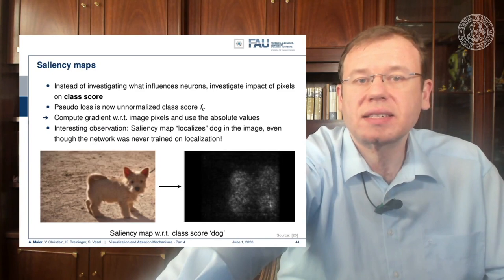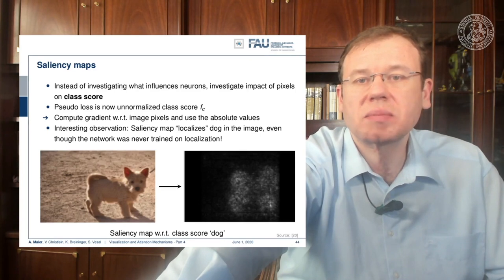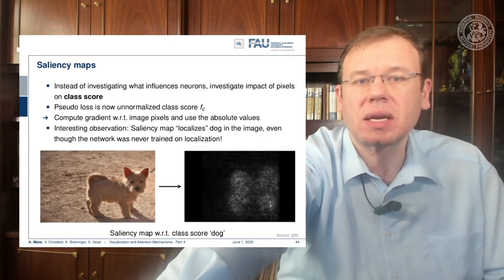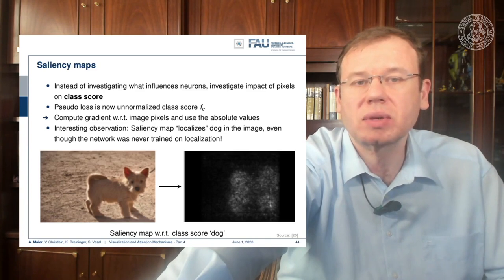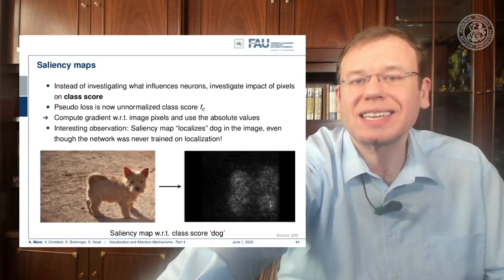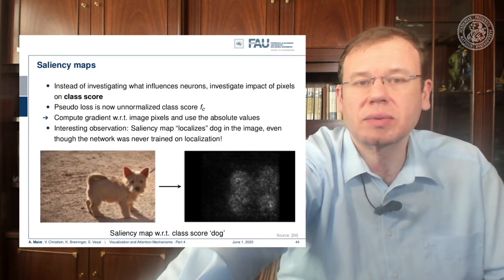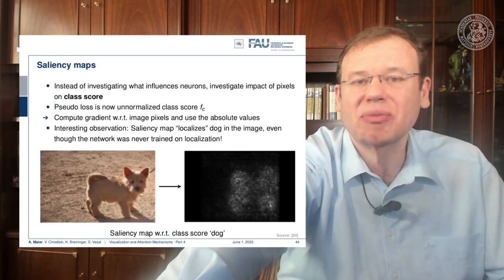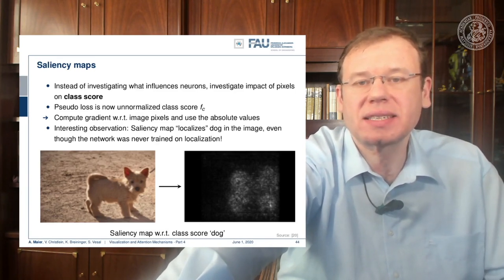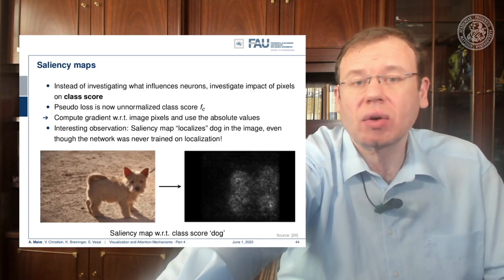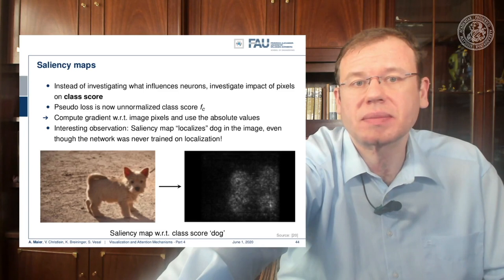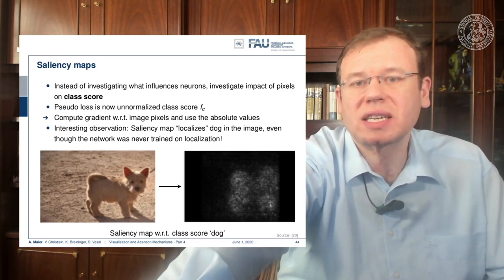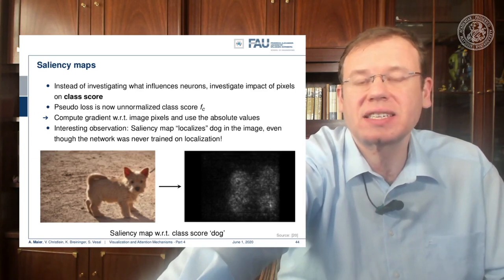This finally leads to saliency maps. Here you don't want to investigate what influences neurons, but rather the impact of pixels on a class score. You take the pseudo-loss as the unnormalized class score, compute the gradient with respect to the image pixels, and use absolute values. The interesting observation is that this produces a saliency map that localizes the dog in the image even though the network was never trained on localization — a very interesting approach to identify where decisive information is actually located in the image.